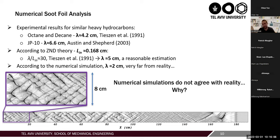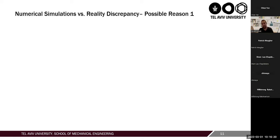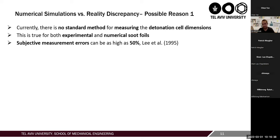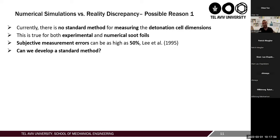The question everyone is asking is why. I'm going to outline two possible reasons for this discrepancy and show how we try to further understand how to mitigate this problem. The first possible reason is that there is no standard method for measuring the detonation cell dimensions — and this is true for both experimental and numerical approaches. When people are measuring cells, subjective measurement errors can be as high as 50%, so combining experimental and numerical errors of that magnitude can lead to very high total errors. The question is whether we can develop a standard method that can objectively measure the cell size for both experimental and numerical data.